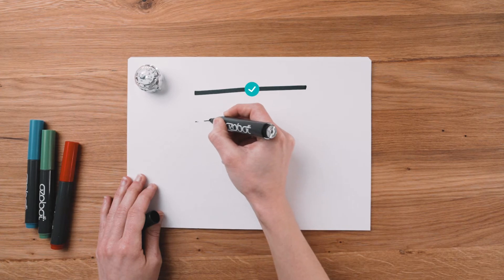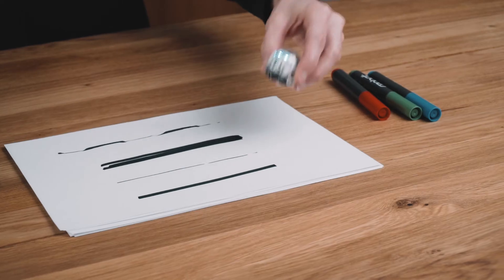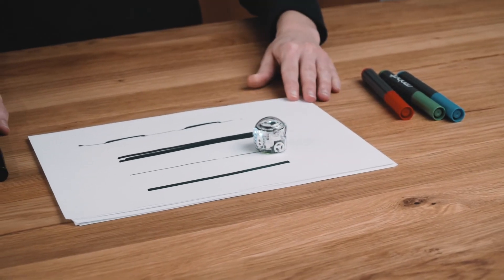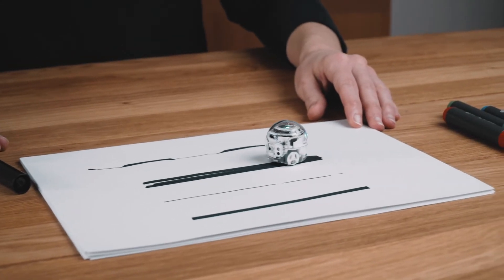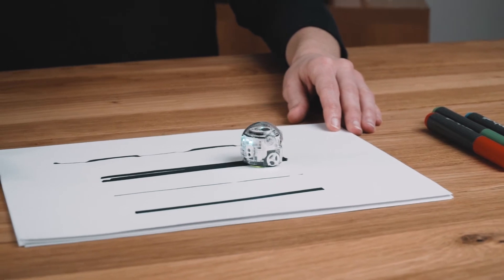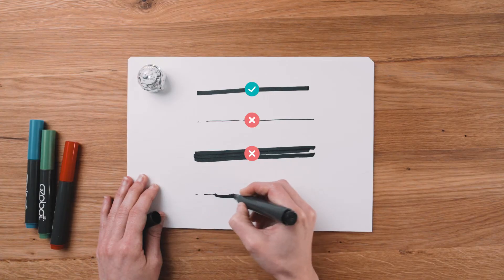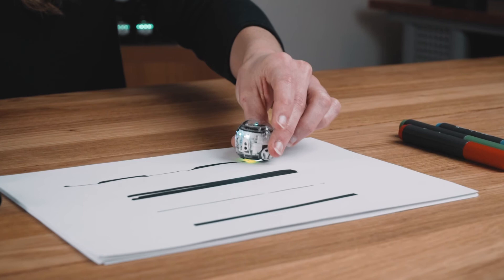If lines are too thin, Evo's sensors won't find the line. If they're too wide, Evo will get confused and won't go in a straight line. If lines are inconsistent, Evo might stop in the middle of a line.